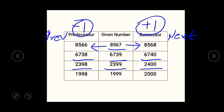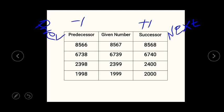Last but not the least, the given number is 1,999. If we add 1 to it, it will become 2,000 — the thousands value changes — so the next number to 1,999 is 2,000, that is the successor. And if we subtract 1 from it we will get 1,998. I hope now you are all clear with the concept of successor and predecessor. In short, the successor is the next value and the predecessor is the previous value for a given number.